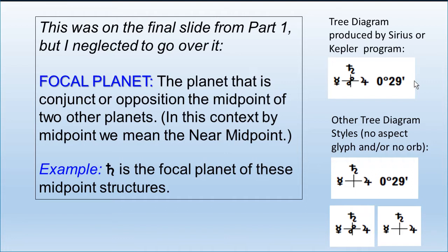When we say midpoint in this context, we mean near midpoint. You take the shortest distance between Mercury and Jupiter, and the point halfway along that shortest distance is the midpoint — more specifically called the near midpoint. So Saturn opposition the Mercury-Jupiter midpoint also means Saturn is conjunct the far midpoint.